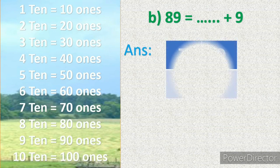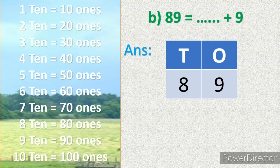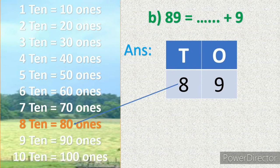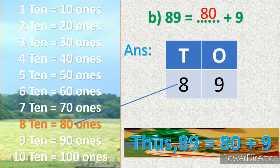First we will arrange this 89 in ones and tens blocks. We know that 8 tens equals 80 ones, so the answer will be 80. Thus 89 equals 80 plus 9.